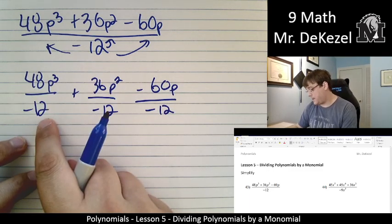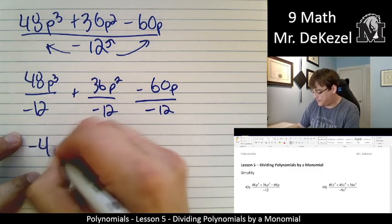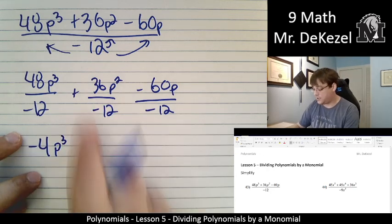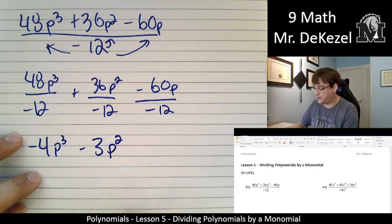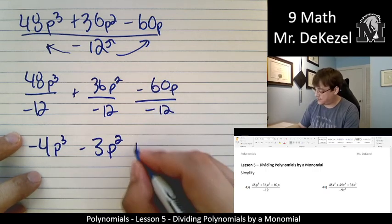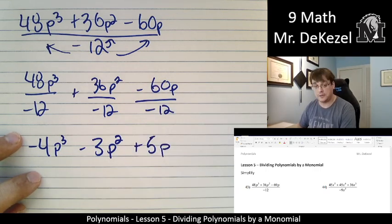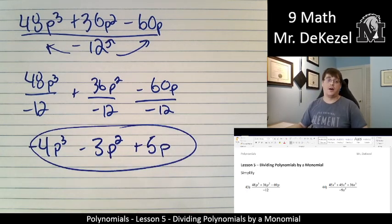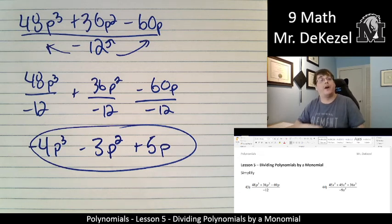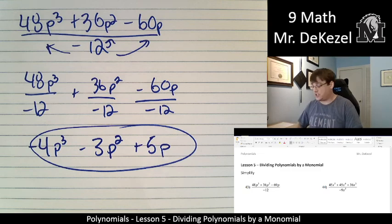48 divided by -12, that's -4p³. 36 divided by 12, that's -3p². -60 divided by 12, that's 5p. And that would be our final answer. When you're dividing a polynomial by a monomial, you just take that monomial and you divide it by each of the terms, however many you have, to get your final answer.